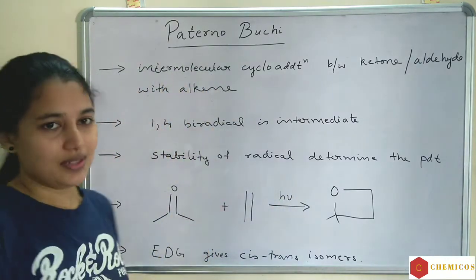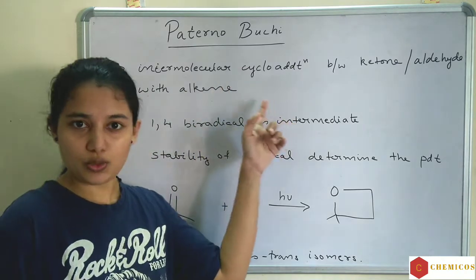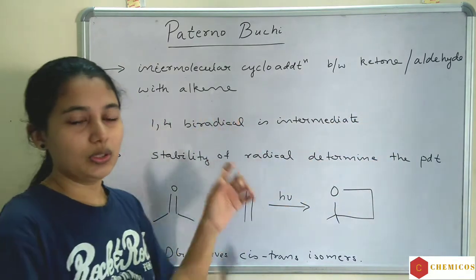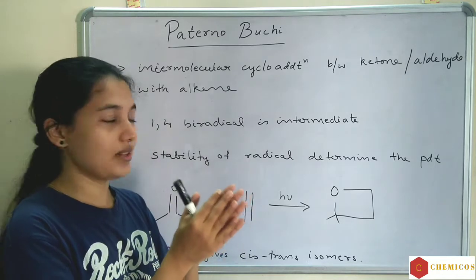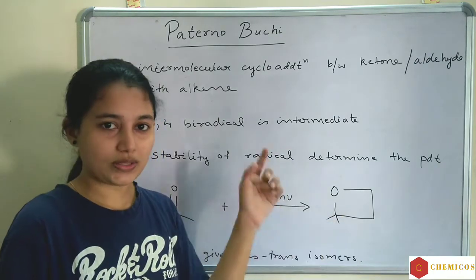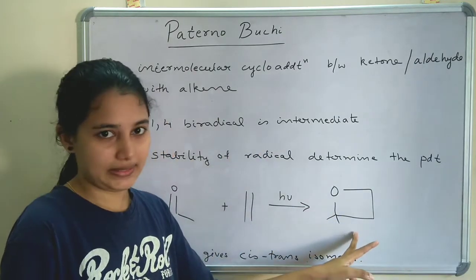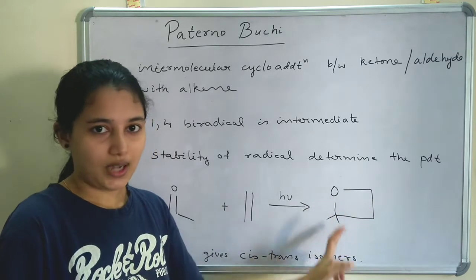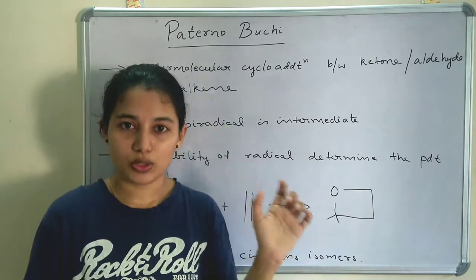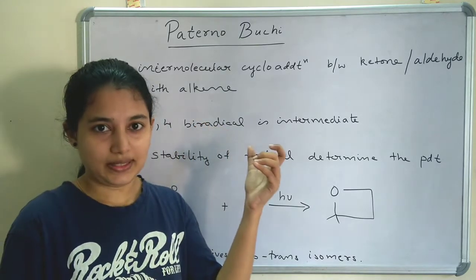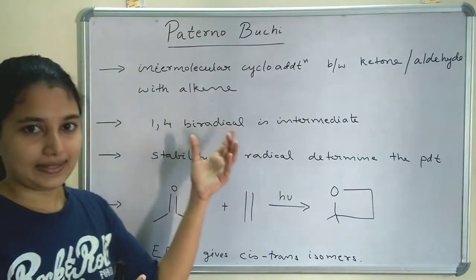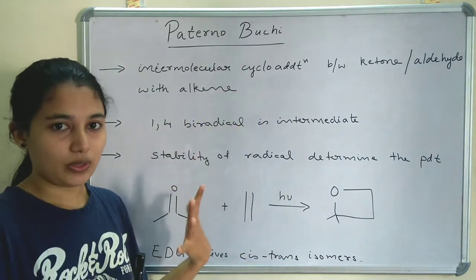The Paternò–Büchi reaction is an intermolecular [2+2] cycloaddition between a ketone or aldehyde with an alkene. So a ketone or aldehyde undergoes cycloaddition with an alkene, and it will form an oxetane. Oxetane is a four-membered compound where oxygen is attached to two other carbons.